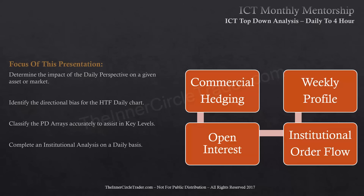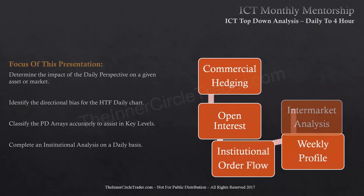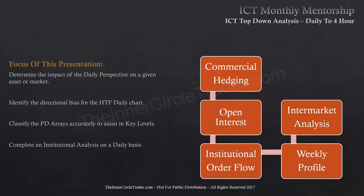Ideally I want to see institutional sponsorship behind price action, shown by institutional order flow. The next thing I do is try to determine what weekly profile is most likely going to unfold. I use the economic calendar to start framing this. If I can't arrive at that, I go with my best assumptions and correct them later during the week if I'm wrong. There may be a weekly profile that works the latter half of the week versus the Monday-Tuesday-Wednesday phenomena I like for one shot, one kill.